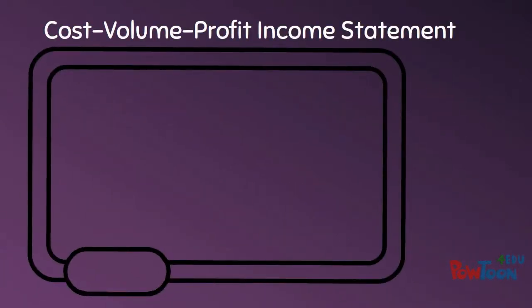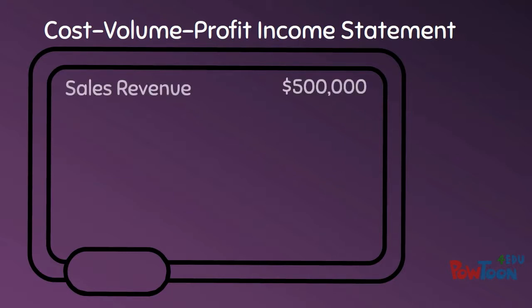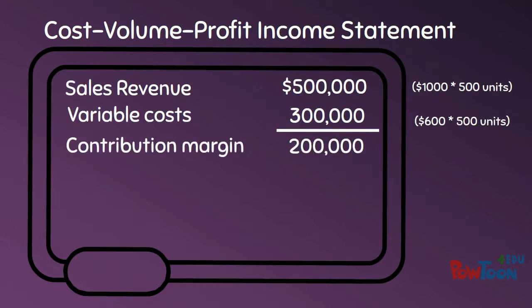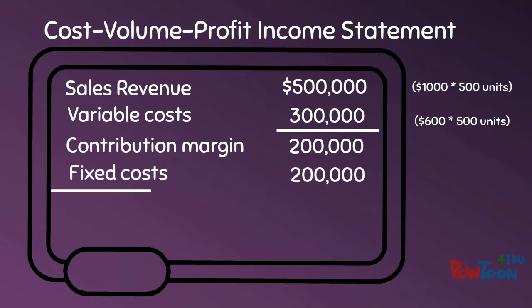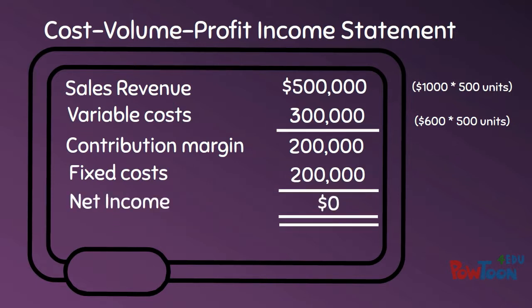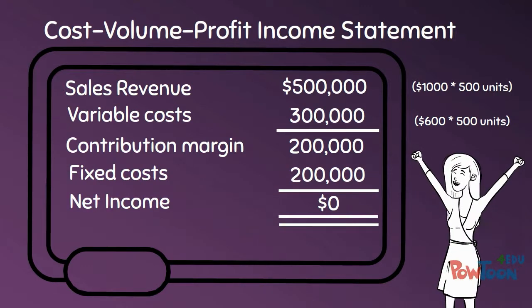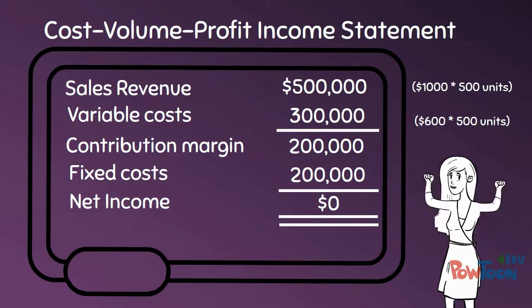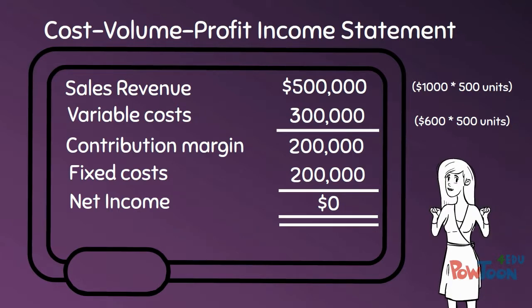Now we can go back to our CVP income statement and check our answer. If we sell 500 spaceships, our revenues will be $500,000 and our variable costs will be $300,000. Our fixed costs won't change, which means we will break even.